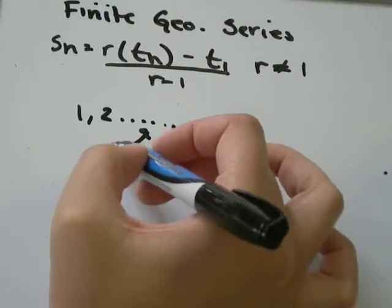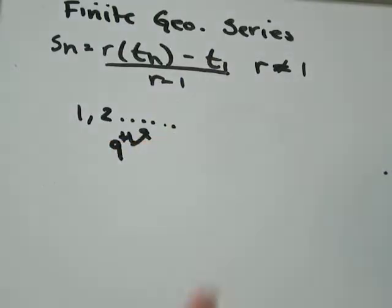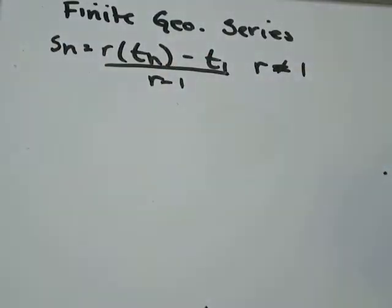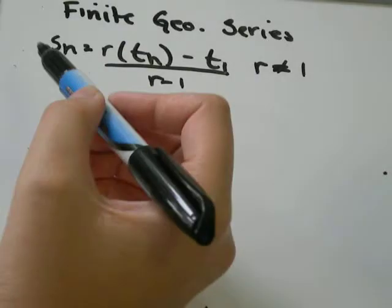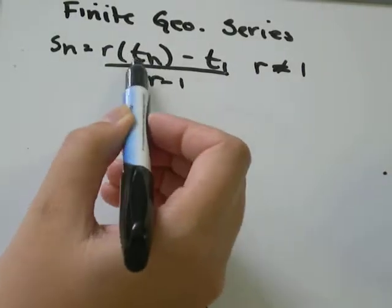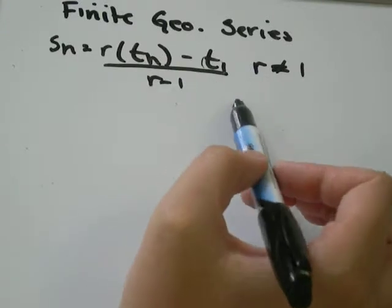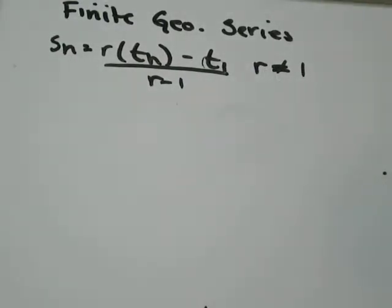Your stopping place might be at the 9th term or the 12th term. So it goes on forever, but you're only looking at a small section of an infinite geometric series. The formula that I like to use is Sn equals R times Tn minus T1 over R minus 1, where R does not equal 1. Sn just stands for the sum of however many terms there are.